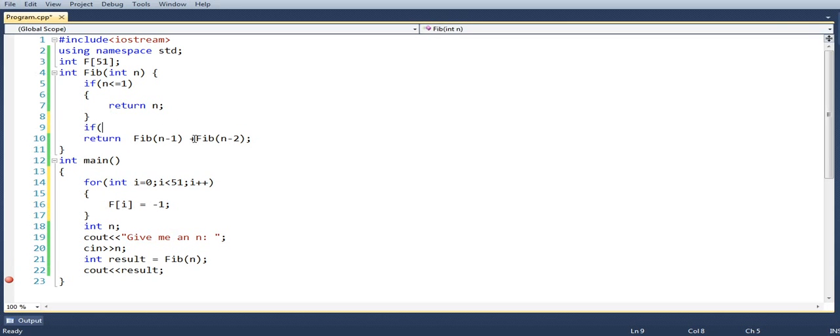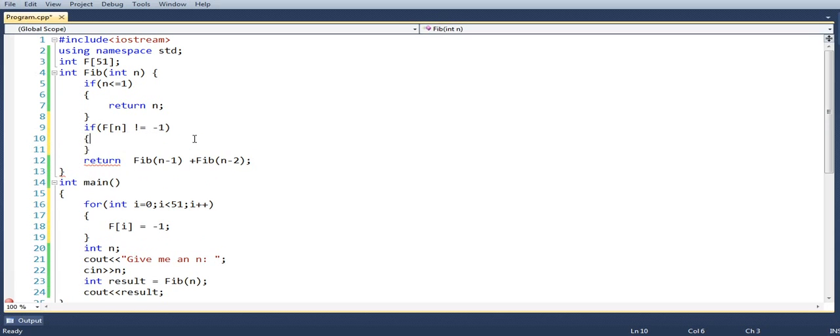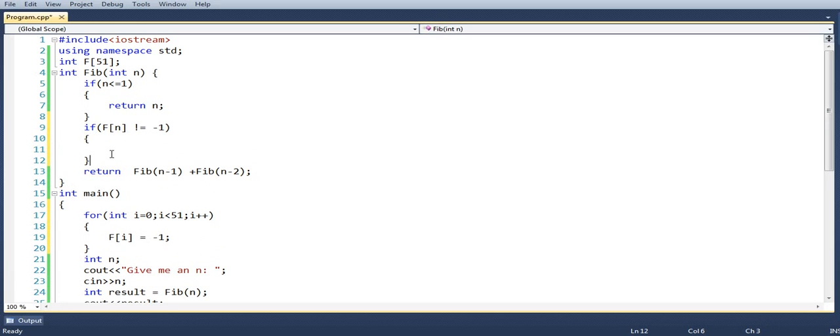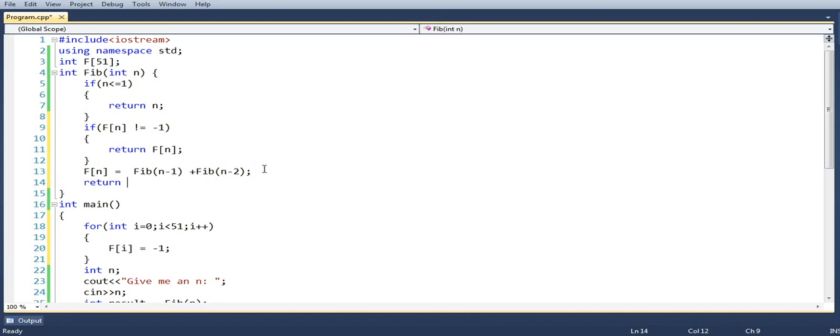In the method fib of n, we would say that if f[n] is not equal to minus one, then definitely it is in the memory and it is already calculated. So we will simply return f[n]. Else, we will calculate f[n] by this recurrence relation and then return f[n].